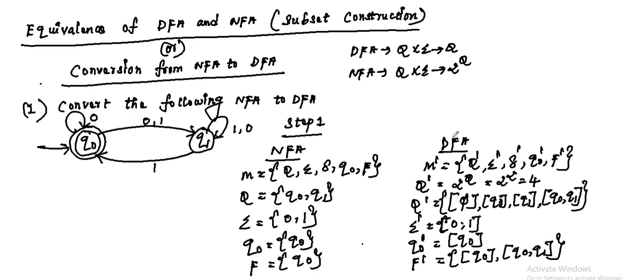In deterministic finite automata, when converting from NFA to DFA, the DFA considers Q dash equal to 2 raised to the power Q, where Q represents the set of states in the NFA. This process involves creating subsets of states in the NFA, resulting in a DFA with 2 raised to the power Q states, which includes all possible combinations of states from the original NFA. Here in this transition diagram we have 2 states, so 2 raised to the power 2 equals 4. We need to write 4 possible combinations of states from the original NFA.